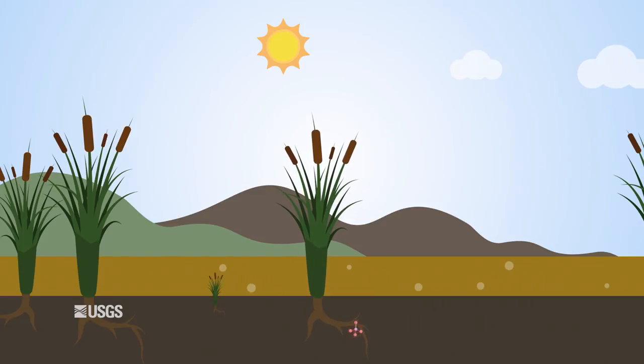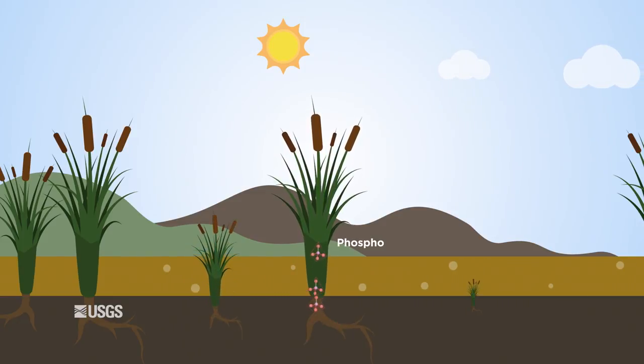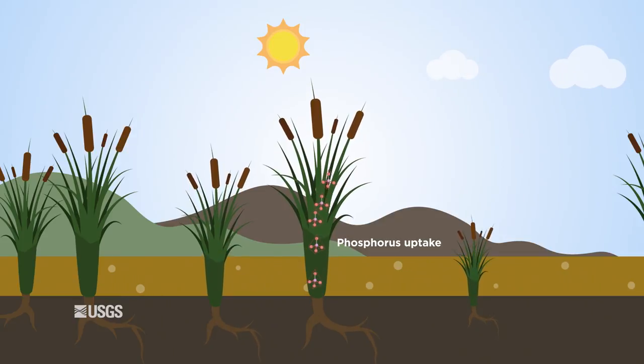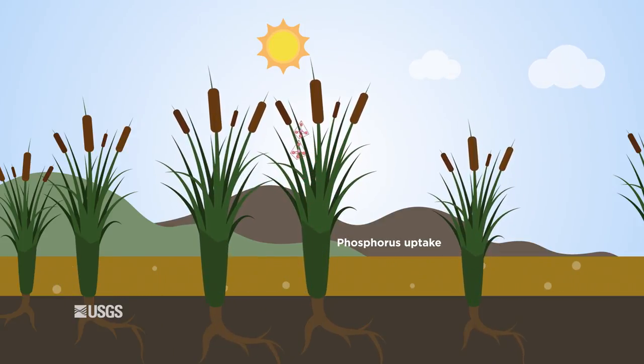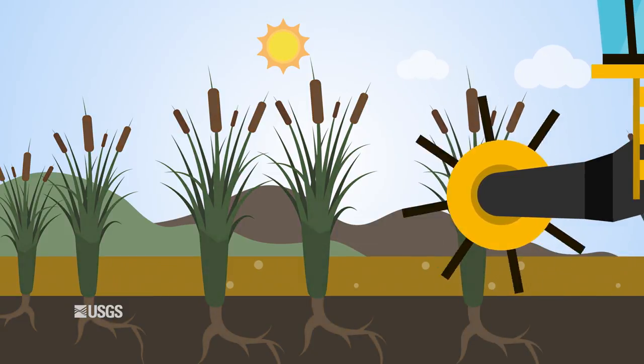Cattail catches sediment, which raises soil nutrient levels. Too much phosphorus can lead to harmful algal blooms. To help remove phosphorus from aquatic systems, managers can harvest nutrient-rich leaves.